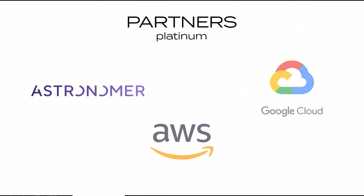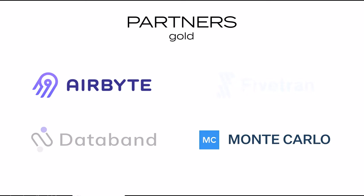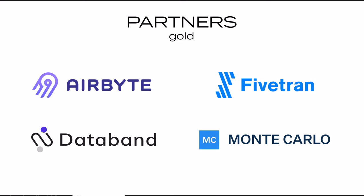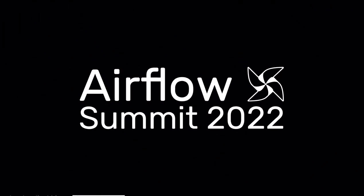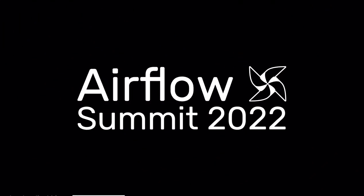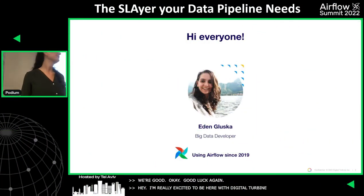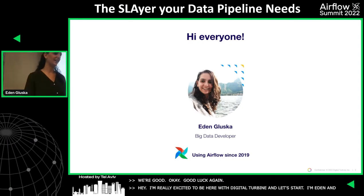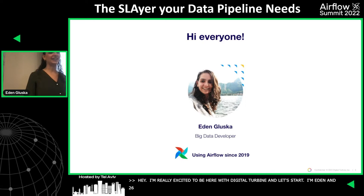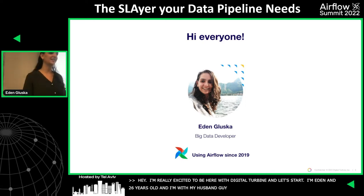Hey, I'm really excited to be here. I'm from Digital Turbine. My name is Eden. I'm 26 years old. I'm living in Petah Tikva with my husband, Guy, and we have a little dog. Her name is Candy, and she really likes to come with me to the office.